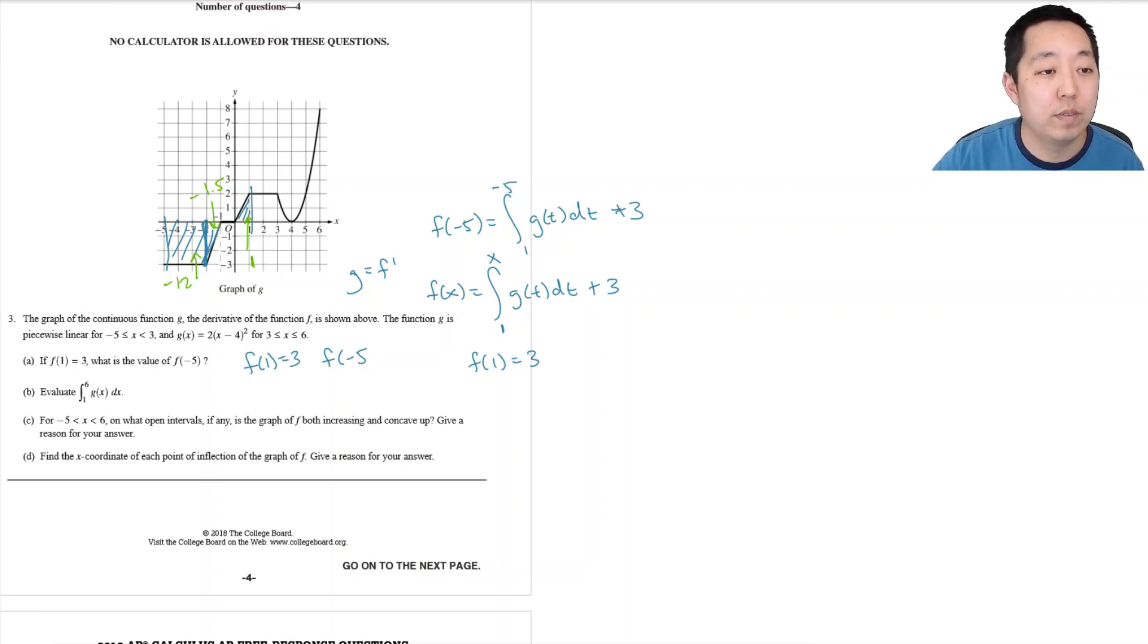But because we're going the wrong way it's positive 12.5 because we're integrating in the wrong order, right to left, it's positive 12.5 plus 3, that's equal to 15.5.